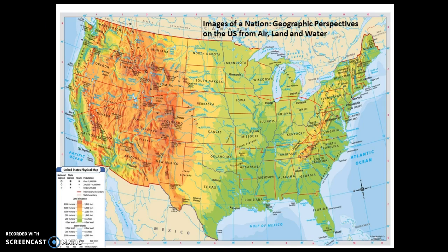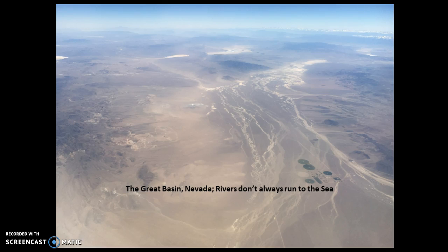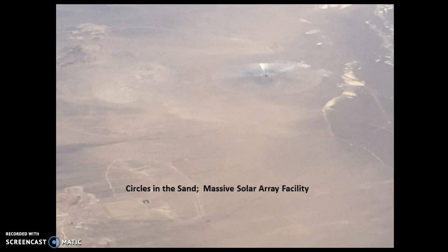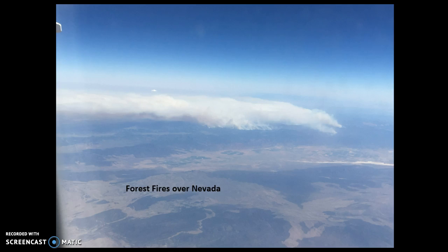So — images of a nation, a geographic perspective on the U.S. from air, land, and water. I have just flown across the country, so I wanted to share some images. The Great Basin — a perfect example of a formal region defined in this case by the physical features of the landscape, this dry arid landscape. You see these river channels that are just draining into these basins. I zoomed in here — you see a great solar facility, indicating the hot, clear, dry conditions that are found there.